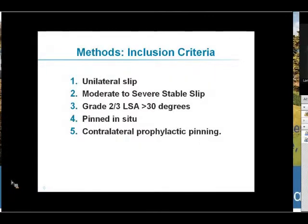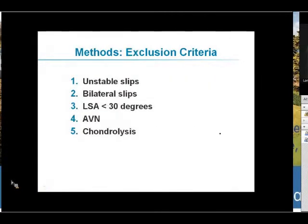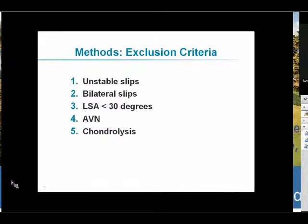We looked at demographic characteristics — age, gender, etc. — as well as physical examination including hip range of motion in all planes. We also looked at radiographic parameters: the lateral slip angle of Southwick, Klein's line offset, and the alpha angle of Nötzli, which I'll introduce subsequently.